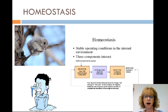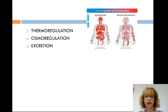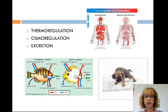The Arctic wolf can maintain body temperatures at minus 50 degrees Celsius. This unit focuses on thermoregulation — how animals maintain an internal temperature within a tolerable range — osmoregulation, how animals regulate solute balance and the gain and loss of water, and excretion, how animals get rid of nitrogen-containing waste products of metabolism.